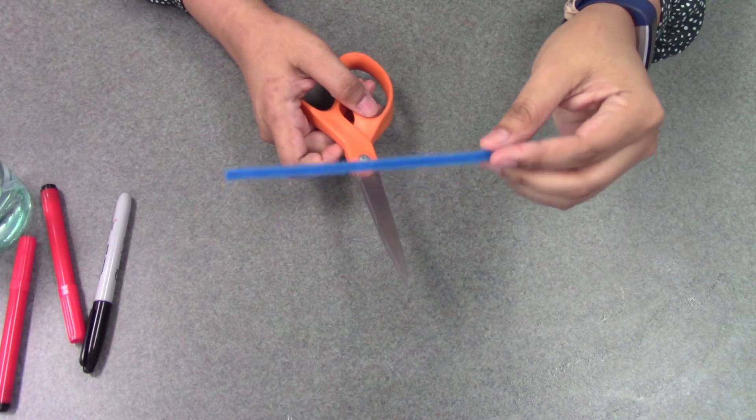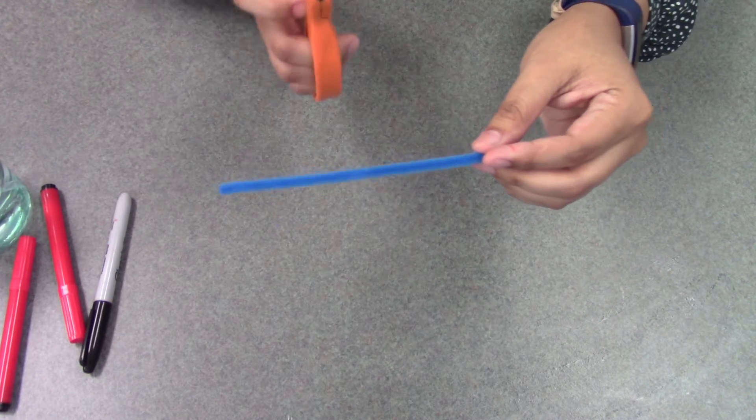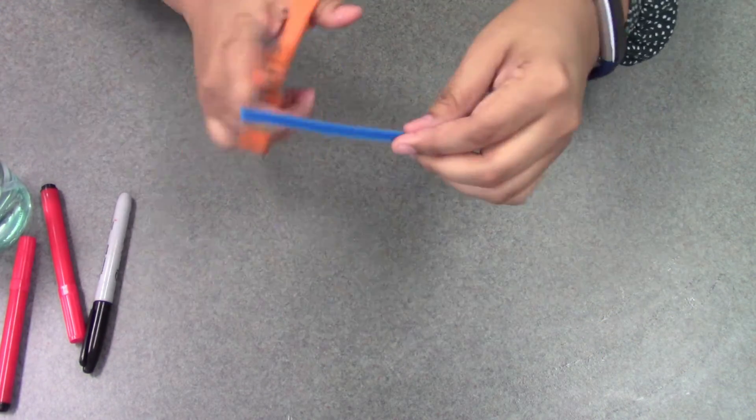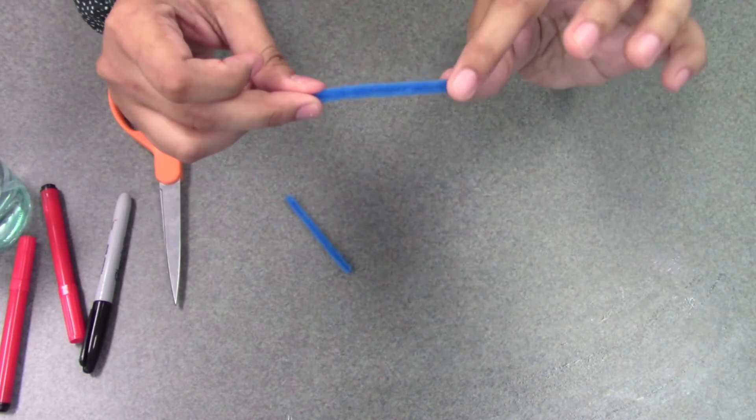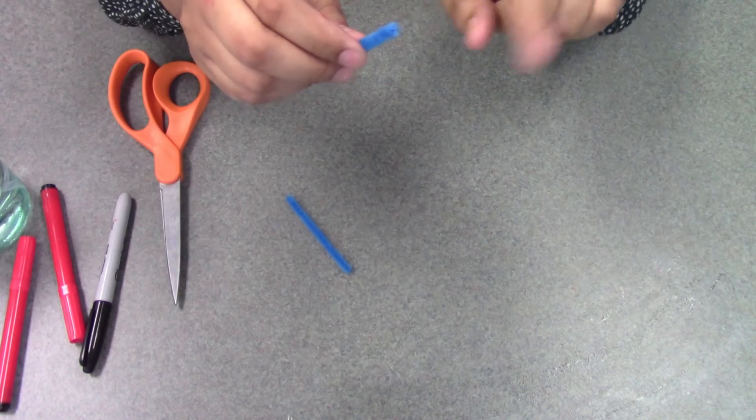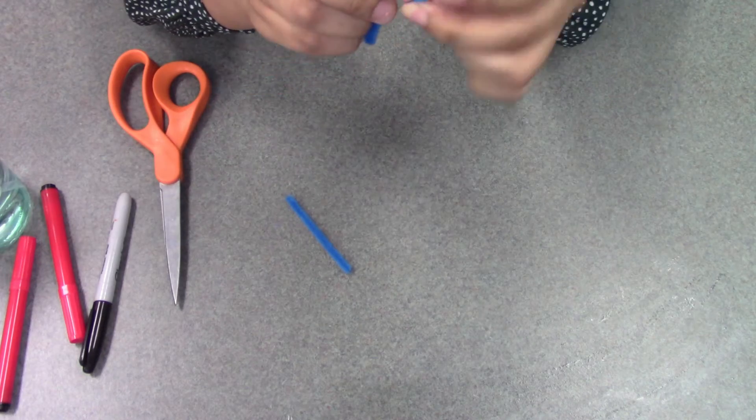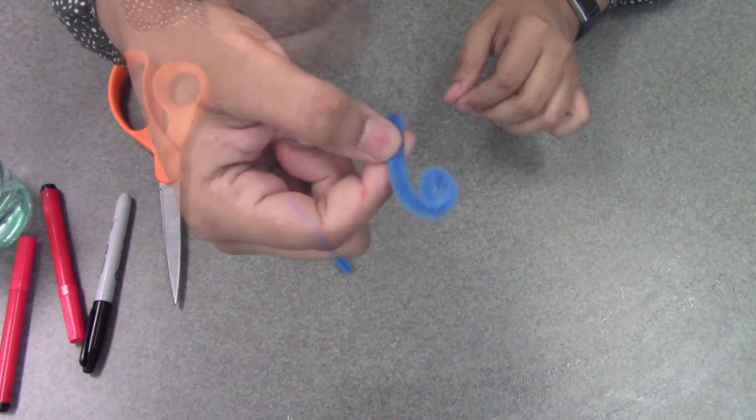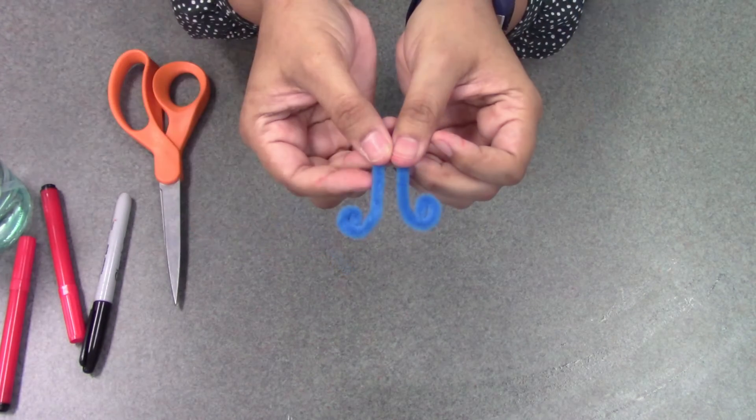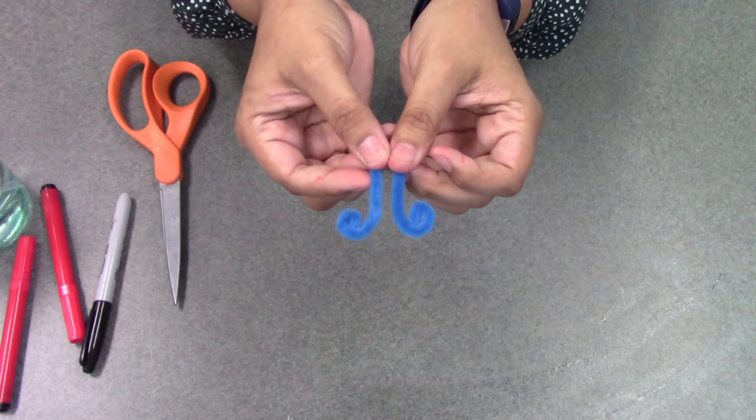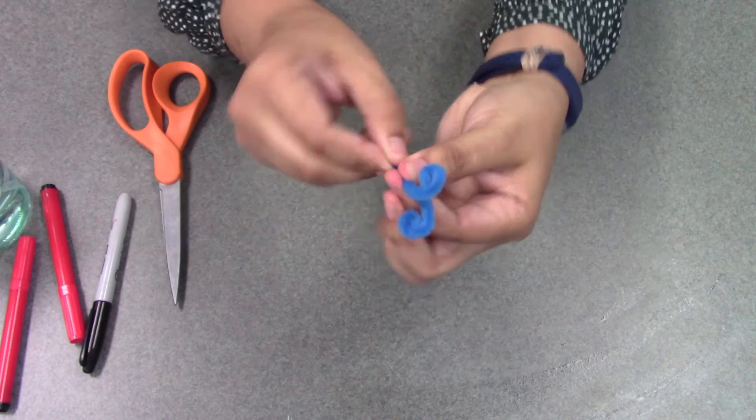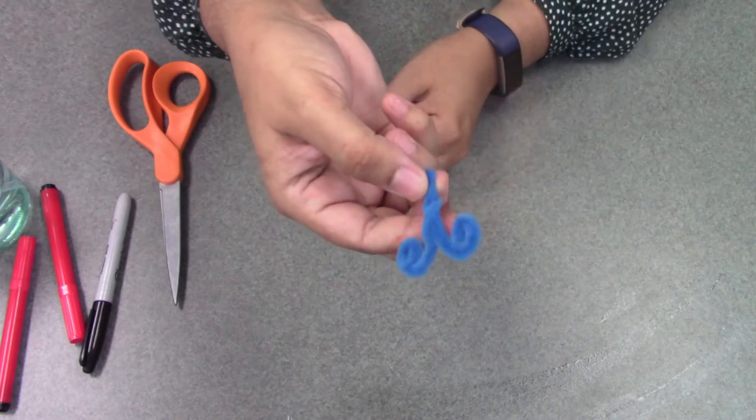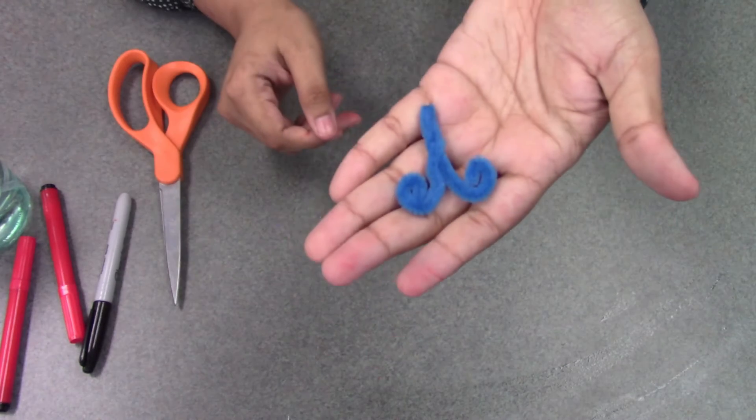Alright, so next you're going to take your half a pipe cleaner and your scissors, and you're going to cut this into two right down the middle. Then you're going to take each one of these and curl one end in a little round curl, just like that. Alright, so then once you have those ends curled, you're going to take the straight ends and twist them together. So then it's going to look like that when you're done.